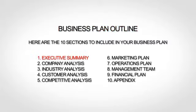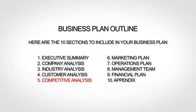The first section is your executive summary, which is essentially the introduction to your business plan. The next section is your company analysis, which gives a little more background. Next up is your industry analysis, where you talk about your market and trends. The fourth section is your customer analysis, where you go more in-depth about your target market. The fifth section is your competitive analysis, where you provide an analysis of your competition, including what differentiates you from your competitors.